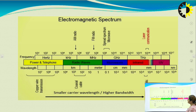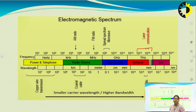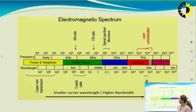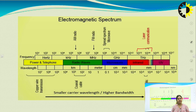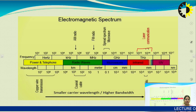Looking at the electromagnetic spectrum, optical communication operates in the wavelength range of nanometers and the frequency range of terahertz — approximately 10^13 to 10^14 Hz — also called the infrared region. The spectrum progresses from power and telephone, through radio waves, microwaves, infrared, and ultraviolet. As frequency increases, wavelength decreases. The three key wavelengths in optical fiber communication are 800 nm, 1310 nm, and 1550 nm.